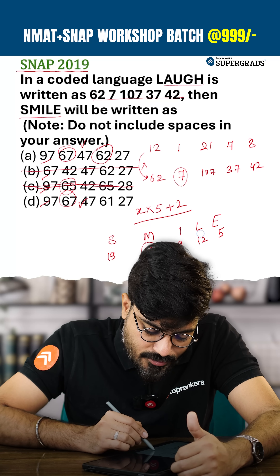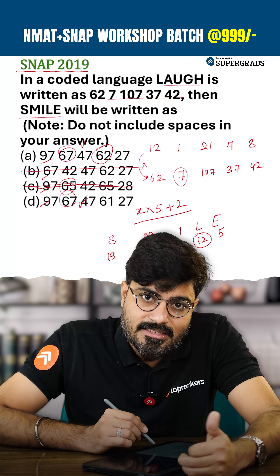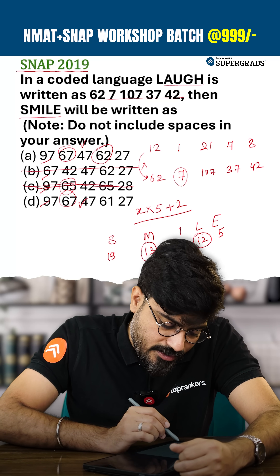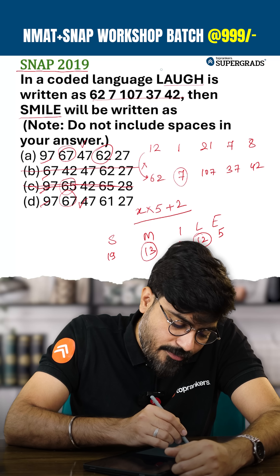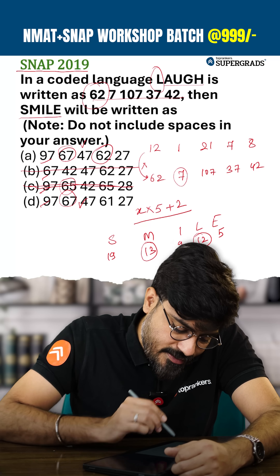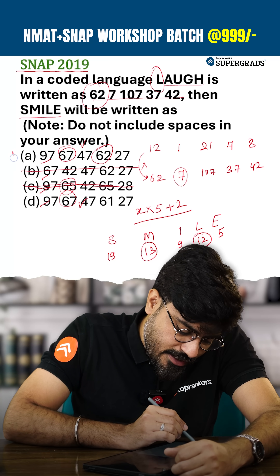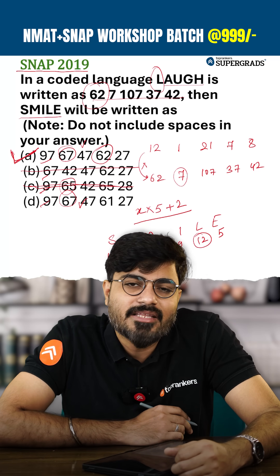For L: 12 × 5 = 60, plus 2 = 62. We can confirm the code for L is 62, which matches the original encoding of 'laugh'. Therefore, the answer is option A — Agra. Thank you.